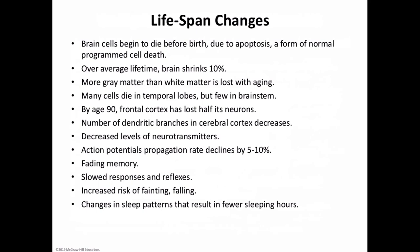Myelin begins to form on axons during the 14th week of prenatal development. At birth, many axons are not completely myelinated. All unmyelinated axons have begun to develop sheaths by the time a child starts to walk — around age one. The process of myelination continues into adolescence. By age 30, the die-off of neurons accelerates somewhat. Over an average lifetime, the brain shrinks about 10%, with more loss in gray matter than white matter. Neuron loss is uneven — many cells die in the temporal lobe but very few die in the brainstem.